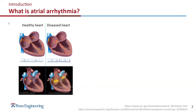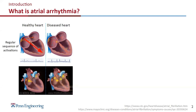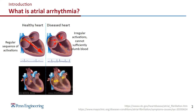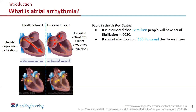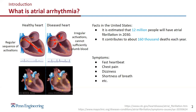This figure is a comparison between a healthy heart and a diseased heart. For a healthy heart, there is a regular sequence of activations coming from the atrium to the ventricle. But for a diseased heart, the activations are irregular, causing inefficiency so the heart cannot sufficiently pump blood. In America, millions of people have this disease and it causes hundreds of thousands of deaths each year. The symptoms include fast heartbeat, chest pain, dizziness, shortness of breath, and more.